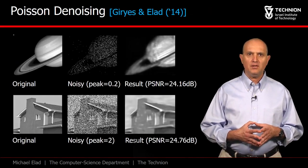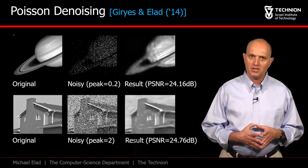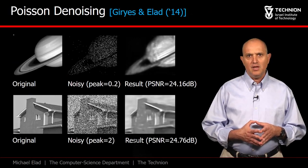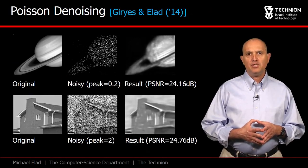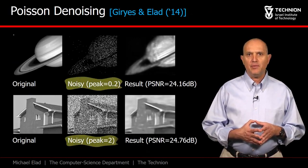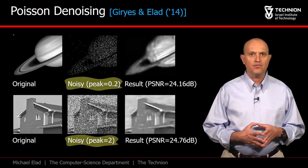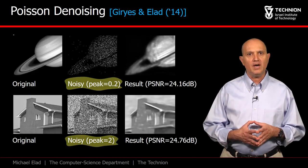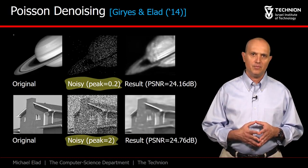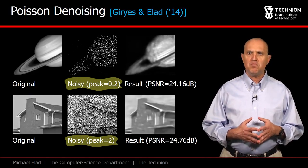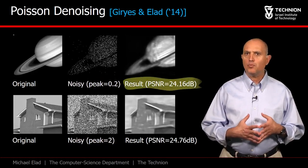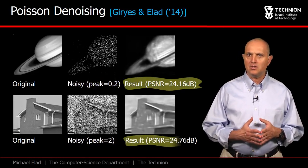These results were obtained in a joint work with Raja Jiris for the problem of Poisson denoising. The noisy images in this case are captured by very low counts of photons, a situation corresponding to low-light photography. This is a much more challenging inverse problem, and as can be seen, surprisingly good results emerge.